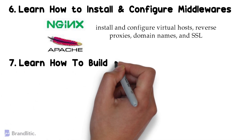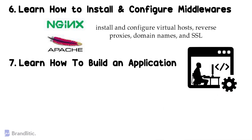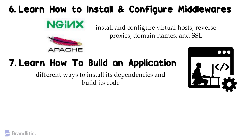Step 7: Learn how to build an application. Building an application comes before running it, and building software is generally about running a procedure of creating a software release that could run in a production server. DevOps professionals need to know about this important part of the software lifecycle. You can start by creating an application in a language of your comfortable choice and check for different ways to install its dependencies and build its code. The basics of this step are enough — no need to deep dive into the application development process itself.